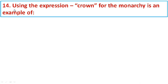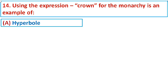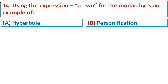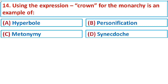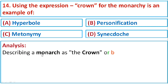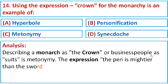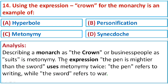Question number fourteen: Using the expression 'Crown for the monarchy' is an example of Option A: Hyperbole, Option B: Personification, Option C: Metonymy, or Option D: Synecdoche. Describing a monarch as 'the crown' or business people as 'suits' is metonymy. The expression 'the pen is mightier than the sword' also uses metonymy twice — the pen refers to writing, while the sword refers to war. The correct option is C: Metonymy.